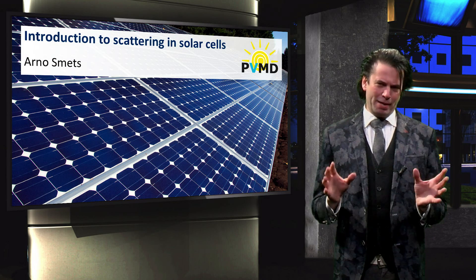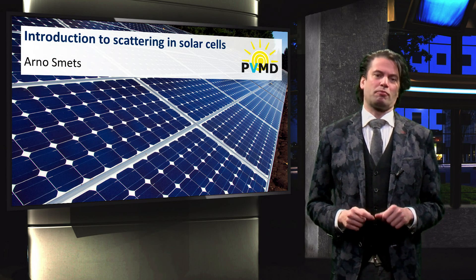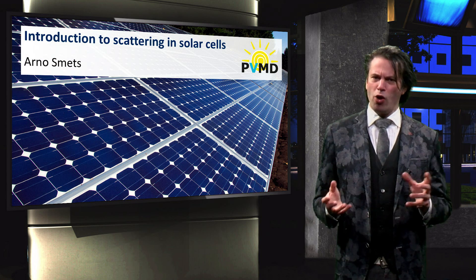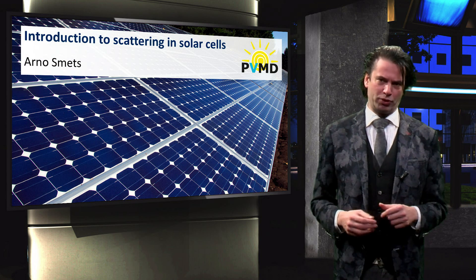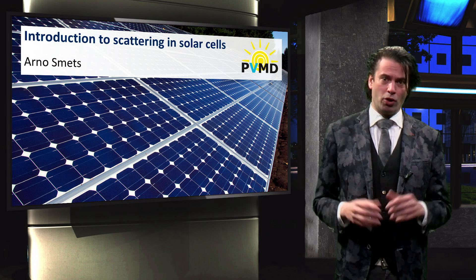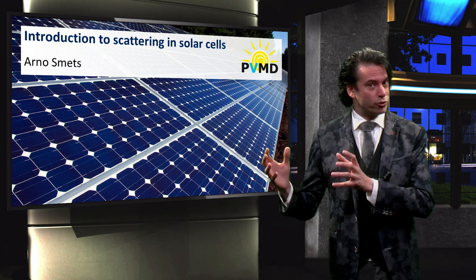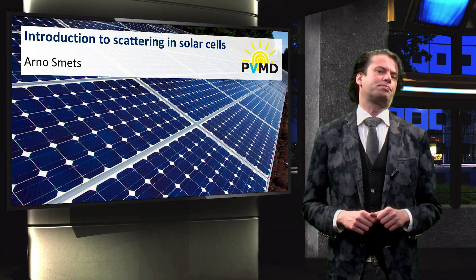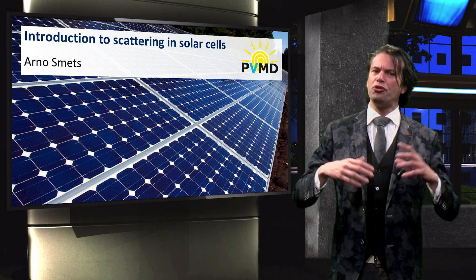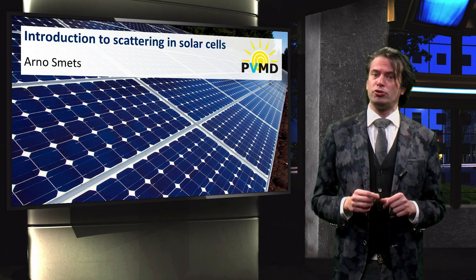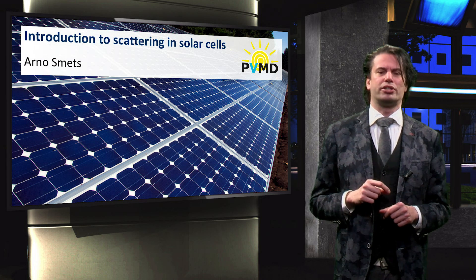We have discussed many properties of light. Our discussion evolved from how light propagates to how it interacts with matter, on both the macroscopic and microscopic scale. Now we shall use all these properties to discuss the scattering of light in solar cells.